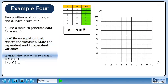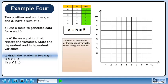In part C, we'll graph the relation in two ways. There is no dependent or independent variable, so we can graph this as B equals minus A plus 5 or A equals minus B plus 5.